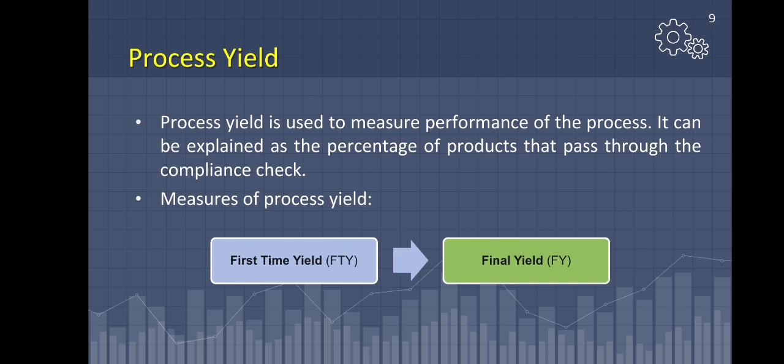Before we discuss different kinds of models, let us first define some important terms used when it comes to modeling. First is process yield. A perfect process must produce without defects or rework. You must have appropriate performance metrics to measure process yield in order to expose unnecessary and costly inefficiencies. Process yield measures should be able to expose even the smallest inefficiencies in a process.